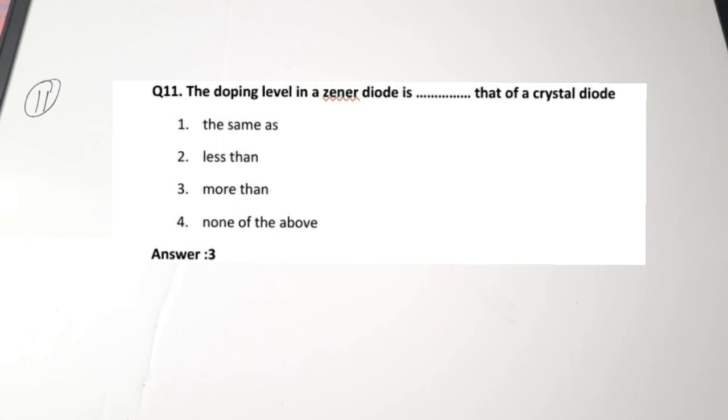The eleventh question is from Zener diodes: the doping level in a Zener diode is dash compared to that of a crystal diode. The doping level is more than that of a normal diode. For a Zener diode, there is more importance to reverse operation, so it has a high doping concentration — more than that of a crystal diode. Correct answer is 3. We have done a detailed video on Zener diodes in the EDC playlist, so please do watch that video for concepts and MCQ questions.